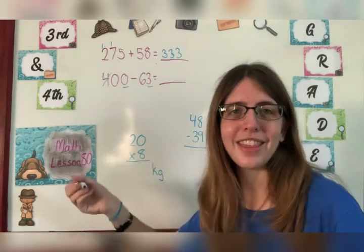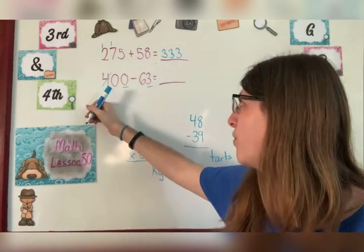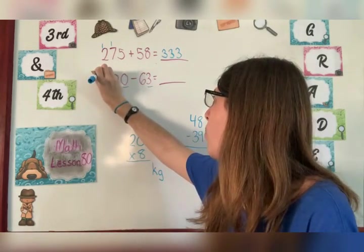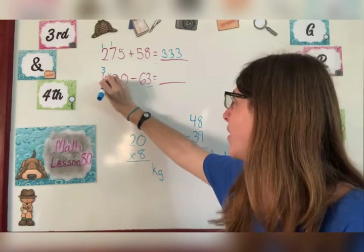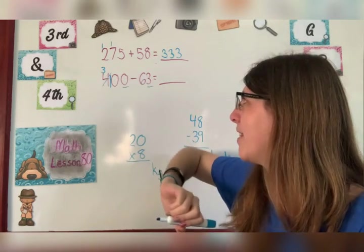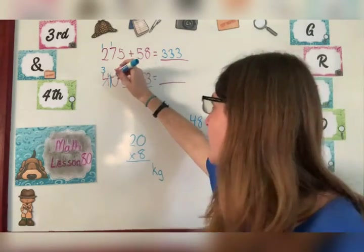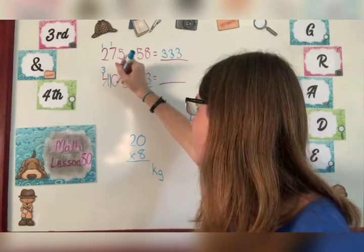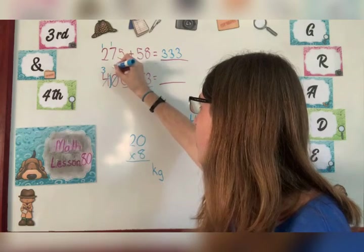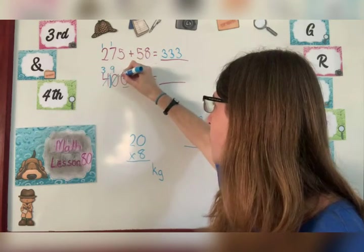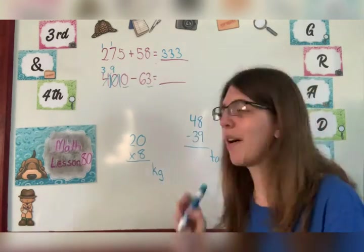I can't borrow from a zero. There's nothing there. So I have to go all the way over to the four. I borrow one. It becomes three. And this becomes ten. Now I'm not done because I want to borrow for this zero. So now I can borrow from here because it's a ten. So it becomes nine. And I bring that one over here. Now I can subtract.